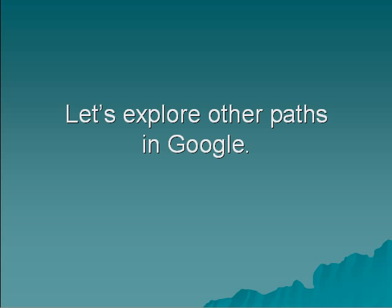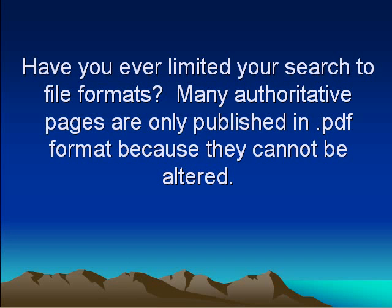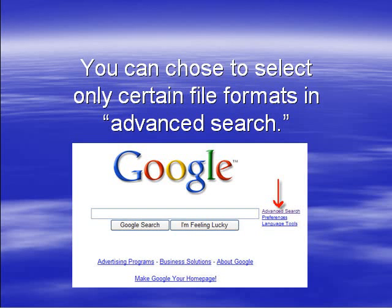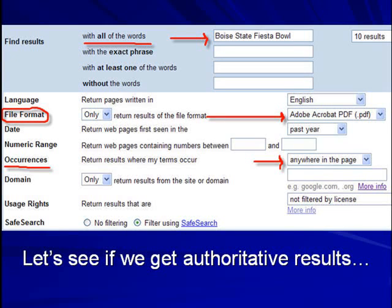Let's explore other paths in Google. Have you ever limited your search to file formats? Many authoritative pages are only published in PDF format because they cannot be altered. You can choose to select only certain file formats in advanced search. Here I will conduct a new advanced search. In the find results field, I'm choosing all of the words 'Boise State Fiesta Bowl,' selecting file formats that are only Adobe Acrobat PDF files, and the words can occur anywhere in the pages.